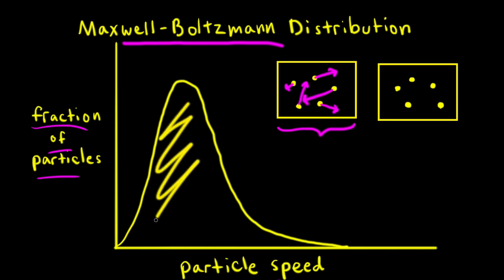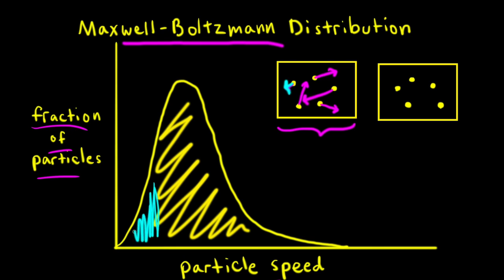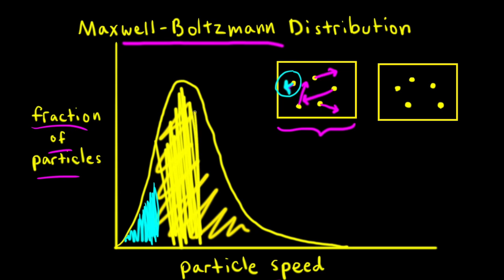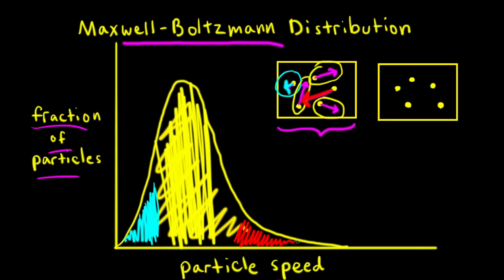We can think about the area under the Maxwell-Boltzmann curve as representing all the particles in the sample. The area at low particle speed is smaller, represented by just one slowly moving particle. The large area in the middle corresponds to particles traveling at higher speed — perhaps three particles. The area at the high-speed tail corresponds to the one fastest particle with the longest arrow.